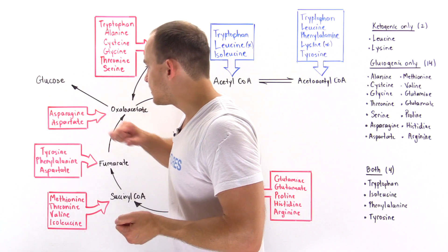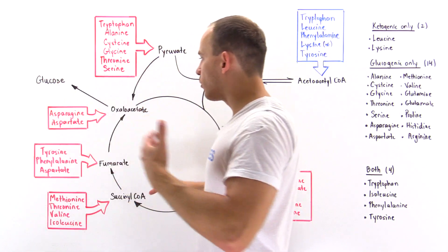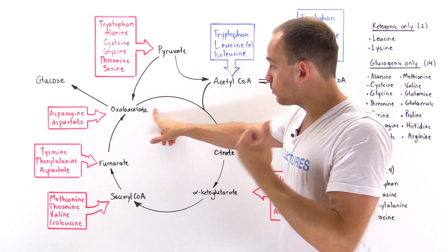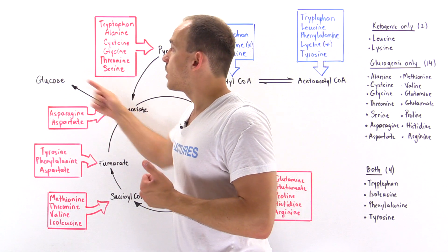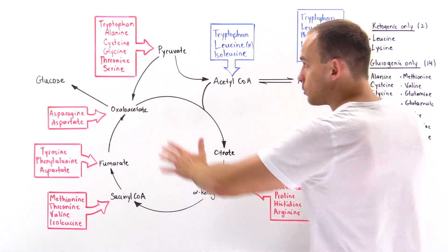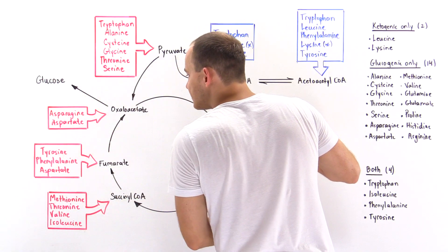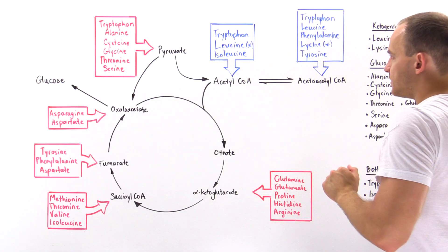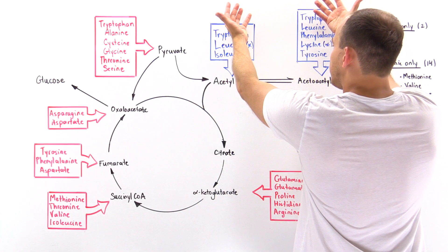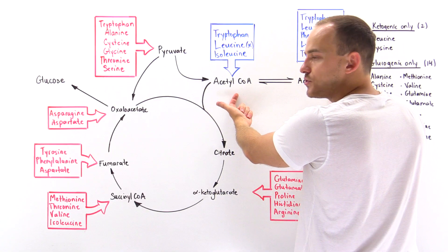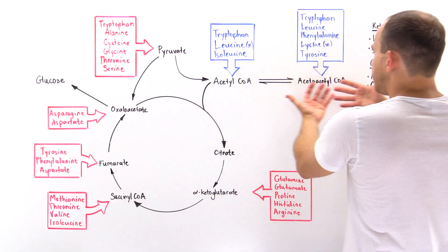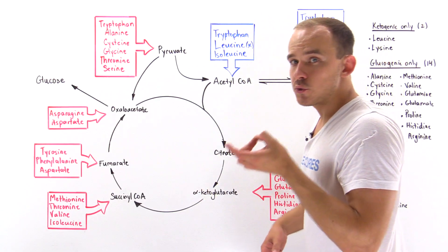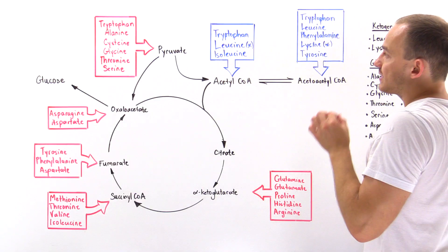If we look at aspartate, for example, aspartate can be transformed into oxaloacetate — as we looked at in a previous lecture — and then the oxaloacetate goes on to form glucose via gluconeogenesis. So all of these amino acids are known as glucogenic. Now, looking at certain others, they ultimately help us form acetyl coenzyme A or acetoacetyl coenzyme A, which can then be used to form ketone bodies. So these are known as ketogenic.